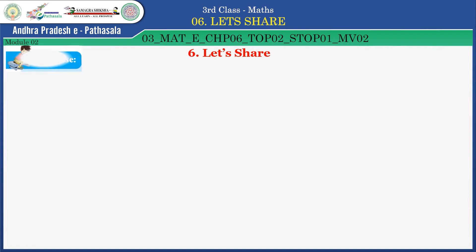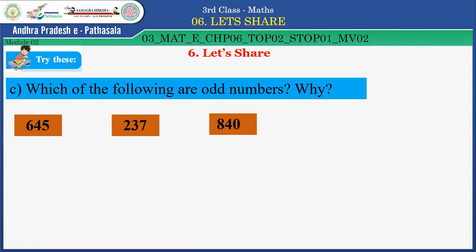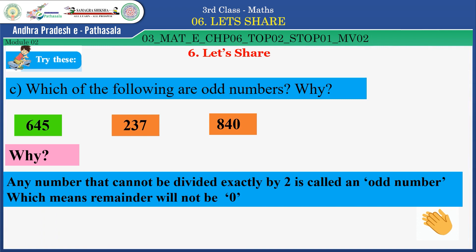Children, try these: which of the following are odd numbers, and why? 645, 237, 840. Among these, which are odd numbers? 645 and 237. The reason is: any number that cannot be divided exactly by 2 is called an odd number — the remainder will not be 0. Very good, children.